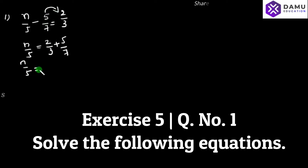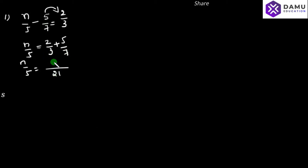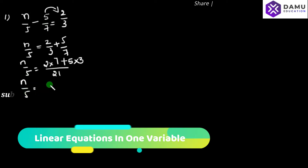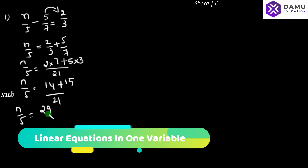So n by 5 will be equal to — take LCM of 3 and 7, which comes as 21, because both numbers are different with no common multiple; they are prime numbers so we multiply both. We get 2 into 7 plus 5 into 3, all over 21. That is 2 sevens are 14, 5 threes are 15, by 21. So n by 5 will be equal to 29 by 21.